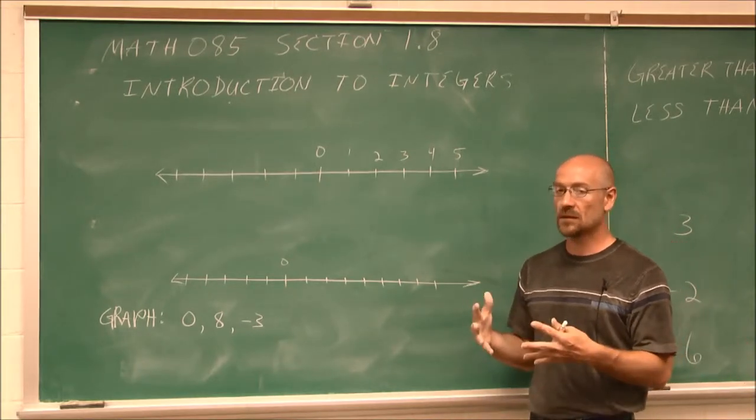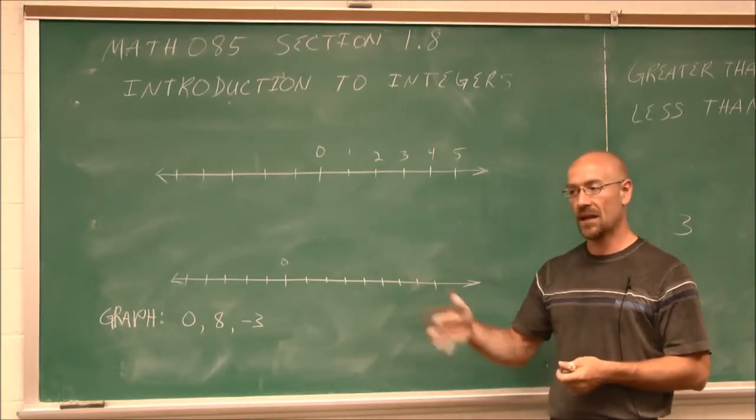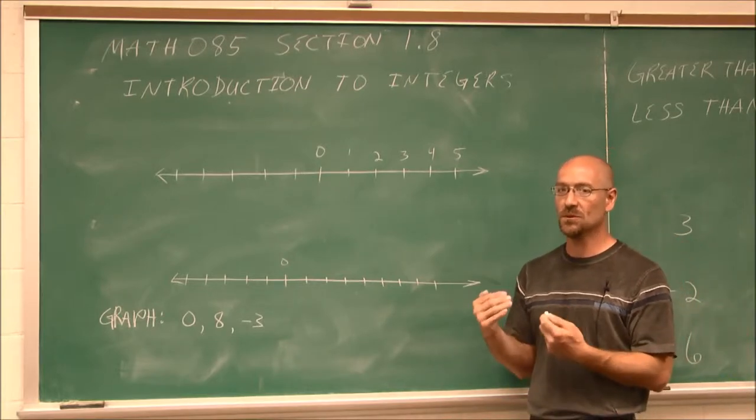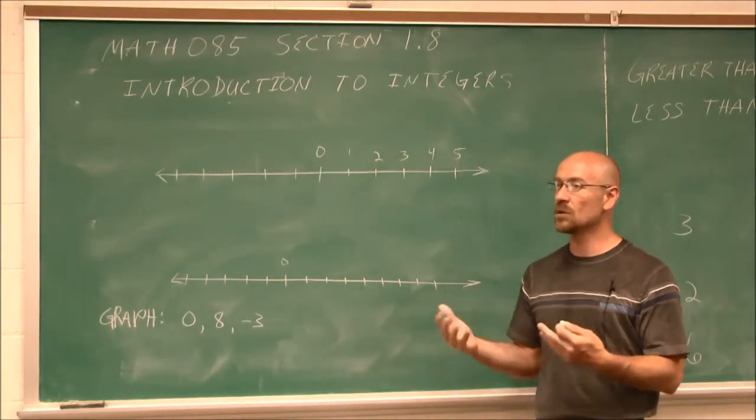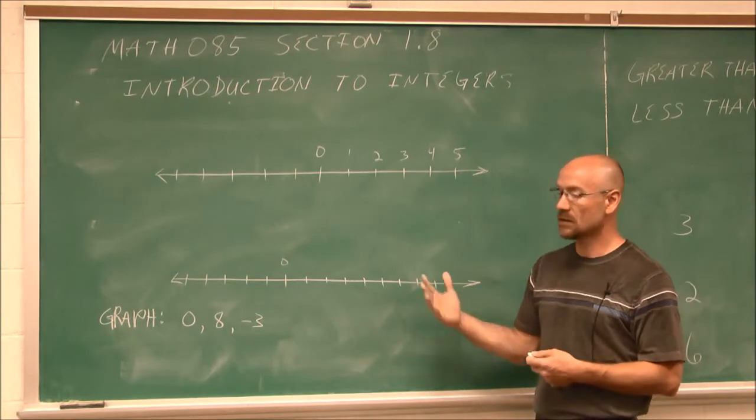As an example, maybe some of us at some point have overdrawn their checking account. The bank shows your statement, you're at a negative amount. That means you have to do something just to get back to zero. To have nothing, you have to pay something forward, which means you're in the negatives. We deal with that all the time.